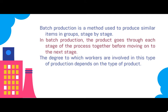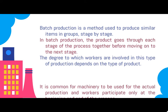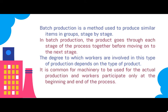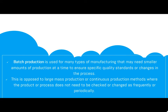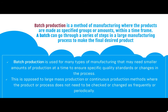The degree to which workers are involved in this type of production depends on the type of product. It is common for machinery to be used for the actual production, with worker participation only at the beginning and end of the process. Batch production is used for many types of manufacturing that may need smaller amounts of production at a time to ensure specific quality standards or changes in the process. This is opposed to large mass production or continuous production methods where the product or process does not need to be checked or changed as frequently.